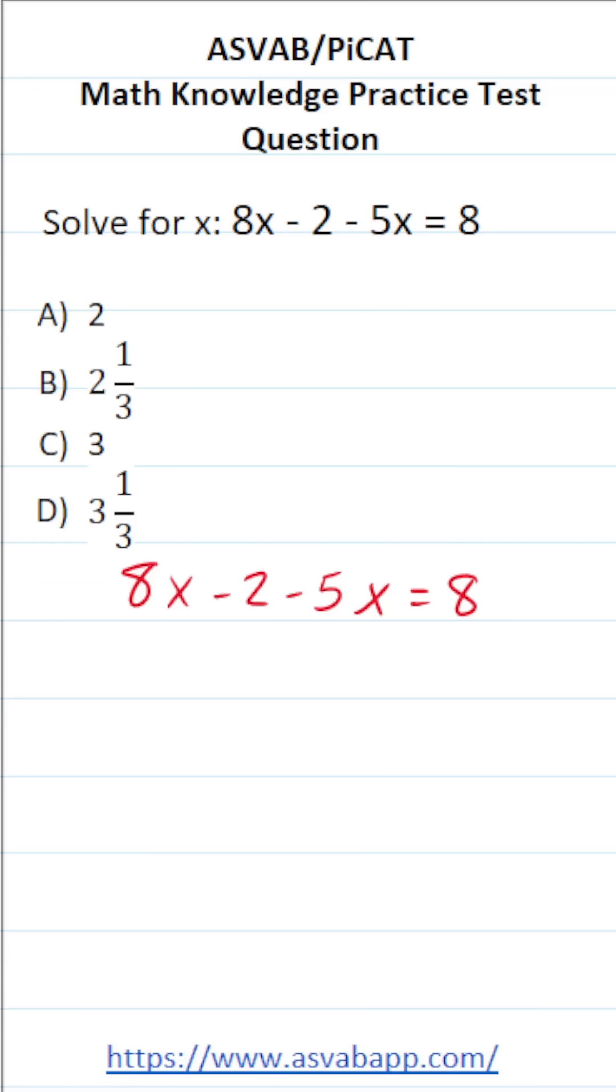To solve this equation, I'm going to get started by combining my terms, notably 8x and negative 5x. 8x minus 5x is going to be 3x. Now that I've combined those two like terms, I'm simply going to cross them out. So this becomes 3x minus 2 equals 8.